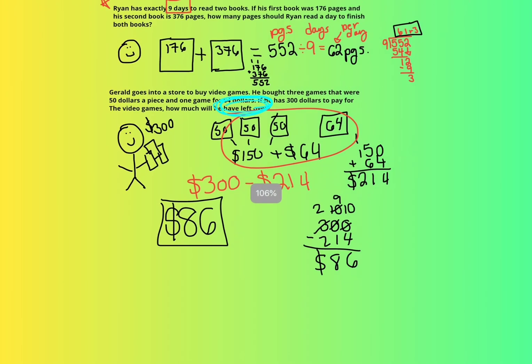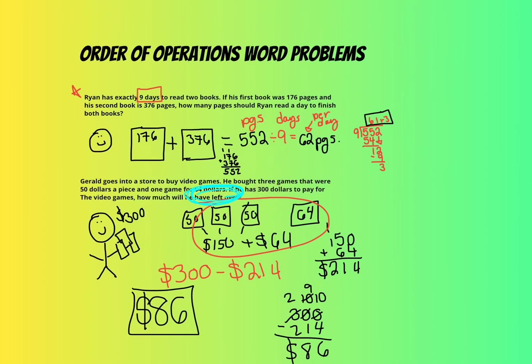Sometimes on these word problems for order of operations, it's best to kind of draw visuals, think about what the question is asking, and then really analyze it and say, okay, this is how I need to set it up. Those are two great examples of how to do order of operations.